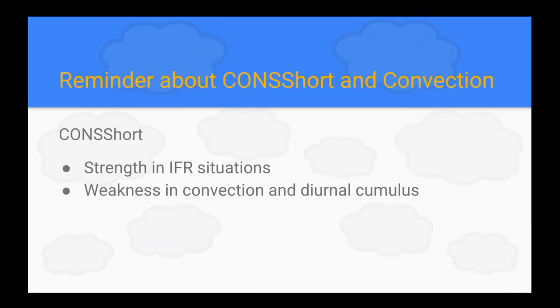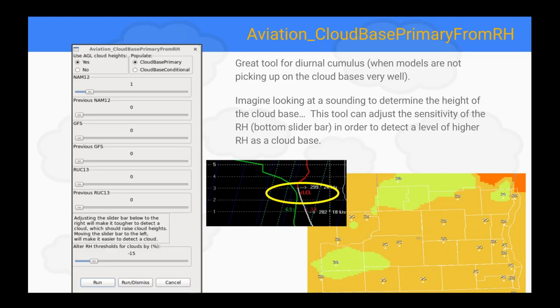A little bit on CONSHORT. We are getting out of the winter season and into the summer season. CONSHORT is really good with IFR situations — verifies well and gives you a great starting point for forecasting. However, CONSHORT does struggle with diurnal cumulus and convective situations. There is a tool available to help: CloudBase Primary from RH. Everyone has it installed in their populate menu of GFE. It's a great tool to use for diurnal cumulus — run it only for the time period you're expecting diurnal cumulus, such as 15Z to 0Z or 1Z.